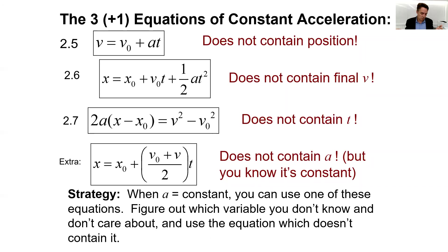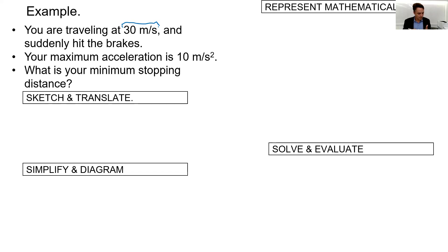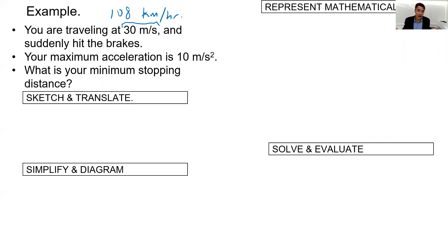Let's do an example. You're traveling at 30 m/s — that's 108 km/h according to Siri — and you suddenly hit the brakes. Your maximum acceleration magnitude is 10 m/s². What is your minimum stopping distance? Imagine you see a deer run out in front of you — how much distance will you need before you stop?